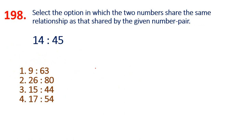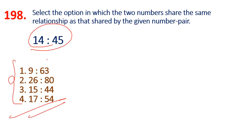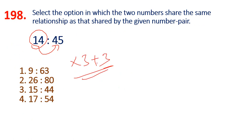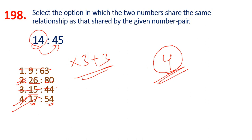So next, 198th question. What is the relation? You can see three times: 14 x 3 is 42, plus 3. x 3 plus 3 is odd. x 3 plus 3 is odd. x 3 plus 2 is odd. So x 3 is odd. x 3 — 51 plus 3 is odd. Exactly, option 4 is odd. Very easy question.